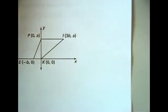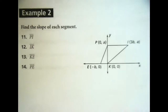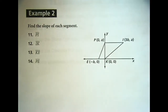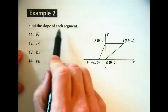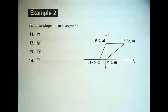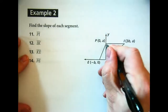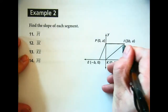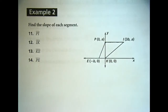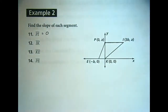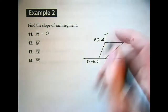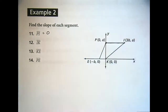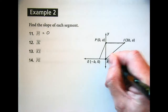Now let's look at the assignment — we're doing example 2 together. Find the slope of each segment. Number 11 is PI. Going from that point to that point, the slope is zero — it's a flat line. You could apply the slope formula, but you can just see it's horizontal.